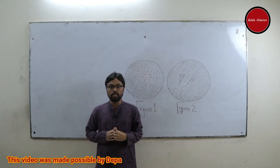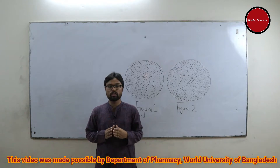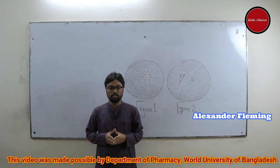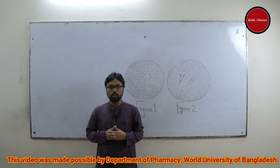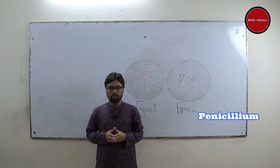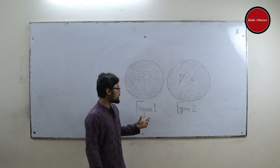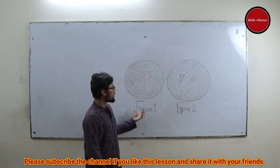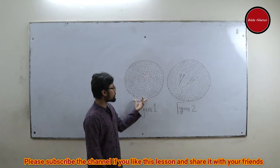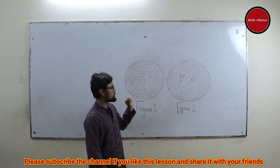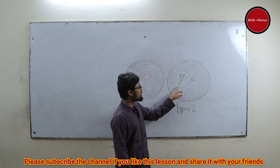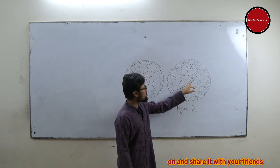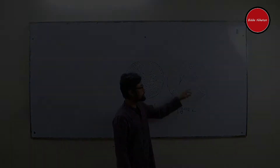In 1928, a Scottish researcher named Alexander Fleming observed that the growth of staphylococci culture was hampered due to contamination by Penicillium, a genus of fungi. In figure 1, we can see a pure culture of staphylococci without any disturbance. But in figure 2, we can see that Penicillium contamination has caused disturbance around the nearby area.